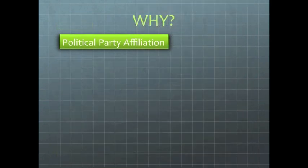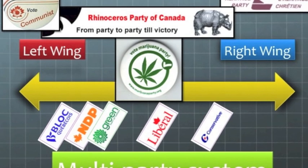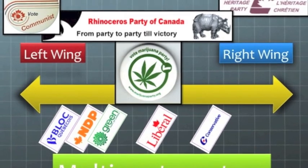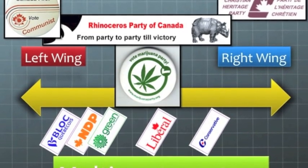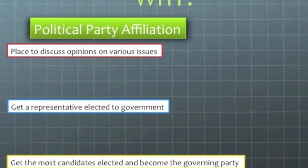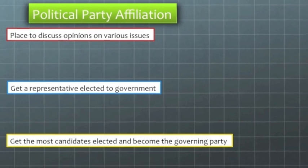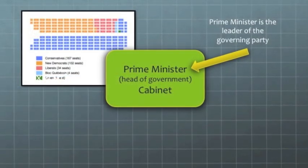Political parties are a group of people who have gotten together to create an association where they can discuss their opinions on various issues. These people have similar values, so they'll be more right-wing or left-wing. But the hope of any political party is to be the government, which means they need to win the most seats in the legislature.